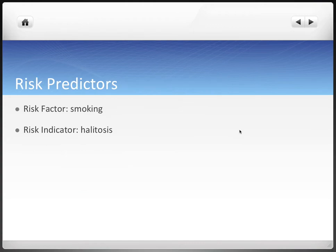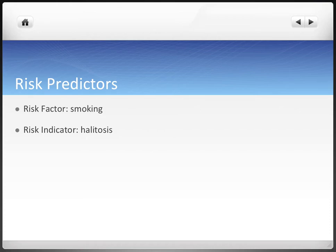A risk predictor can be categorized into two specific things. Risk factors are causally associated with disease — for example, smoking and periodontal disease, which is not only statistically linked but also biologically linked. A risk indicator is just a marker of exposure to a risk factor. For example, halitosis or bad breath is collateral damage from smoking — a side effect that is indirectly linked to increased incidence of periodontal disease.